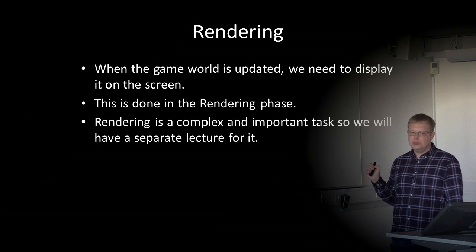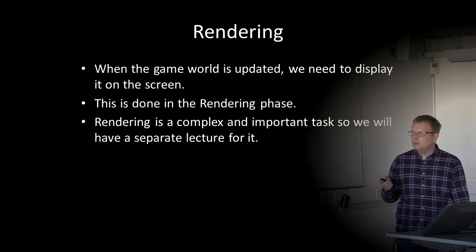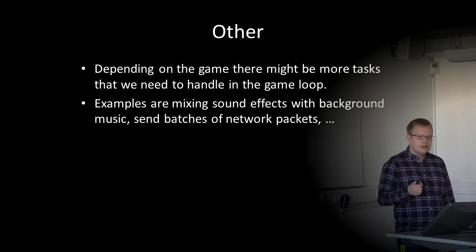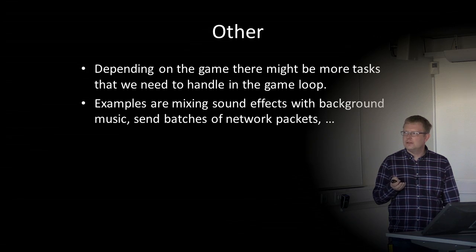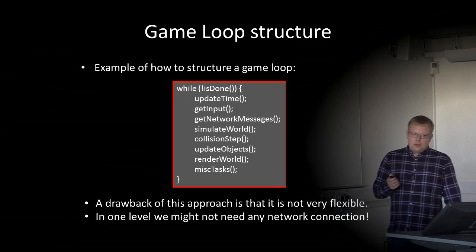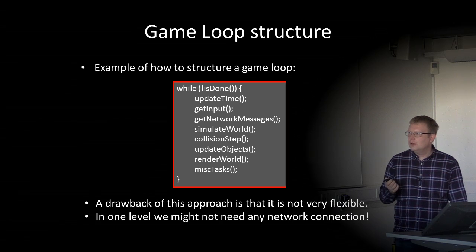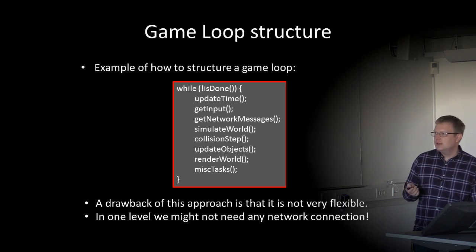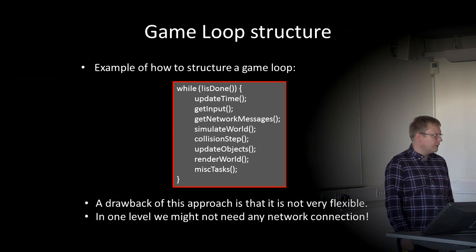When we have simulated and updated the game world, we need to display it on screen — this is called the rendering phase. Rendering is a complex and important task that we will cover more in the fourth lecture. Depending on the game, there may be additional tasks in the game loop: mixing sound effects with background music, sending batches of network packets, handling additional network input. A structured game loop might look like: while the game is not finished — update the time, get player input, get network messages, simulate the world, handle collisions, update objects, render the world, and handle anything else.